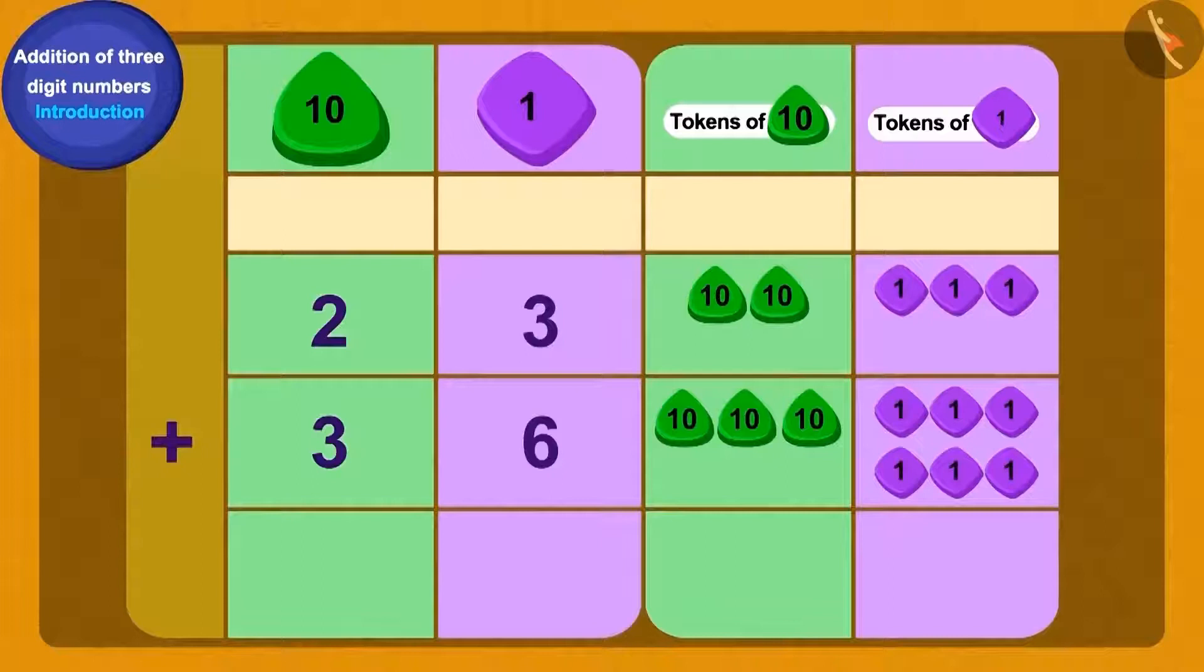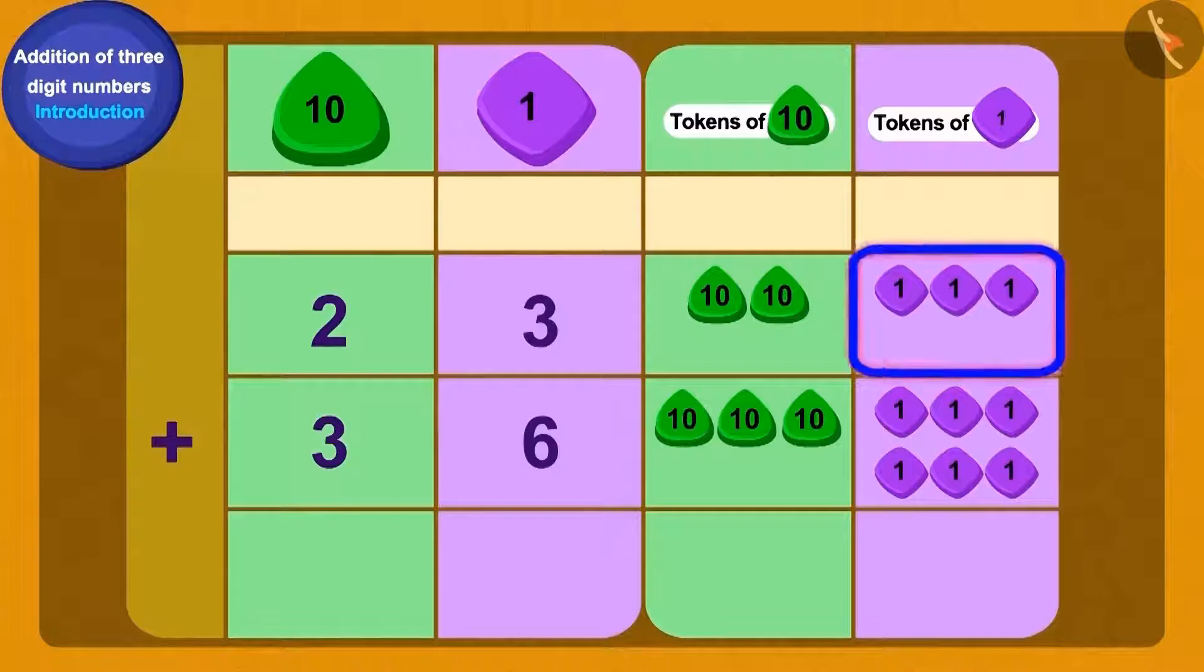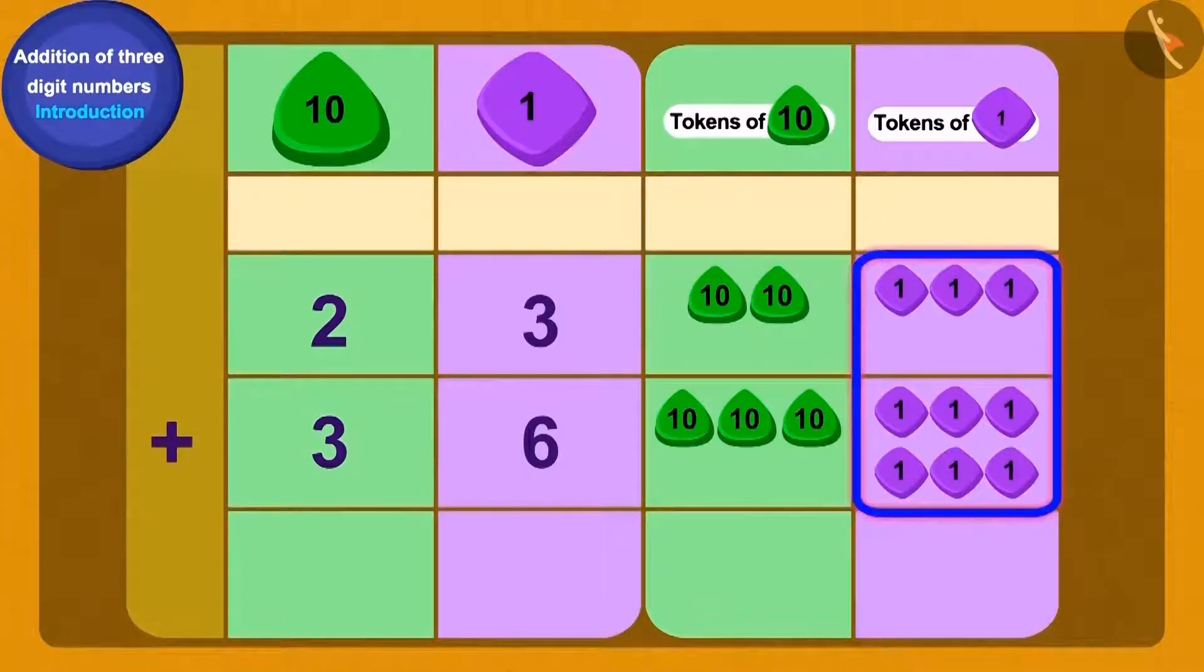Do you remember you learned in class 2 about how to write two digit numbers using the method of tokens of tens and ones? We can write 23 and 36 using tokens like this. We will first add the ones, add 6 ones to 3 ones and we get how many ones? 9 ones.